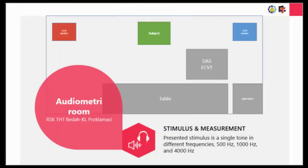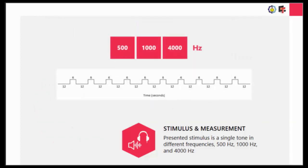The measurement was done in an auditory room with the ECVT helmet placed on the subject's head. Stimulation was played into the right ear from loudspeakers, because placing a headset inside the sensor area would interfere with the sensor. The stimulus was a single tone at random frequencies of 500, 1000, and 4000 Hz, with a 12-second interval and each stimulus lasting 6 seconds.